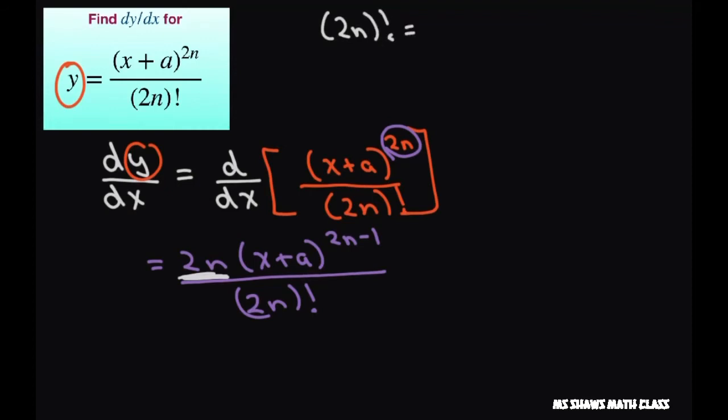That's basically 2n times 2n minus 1 times 2n minus 2 and so forth. And the more you go on, you put the factorial. We just want the 2n. So we're going to write this as 2n factorial equals 2n times 2n minus 1 factorial.